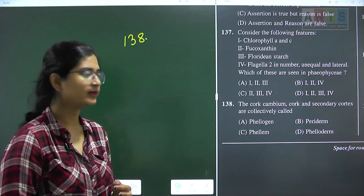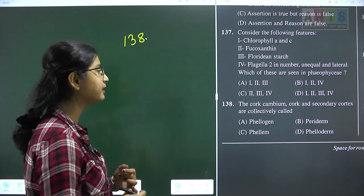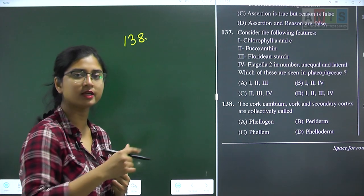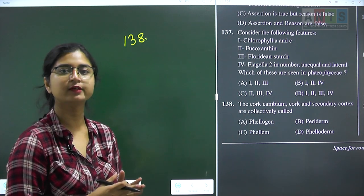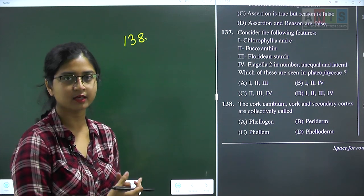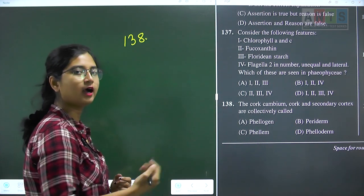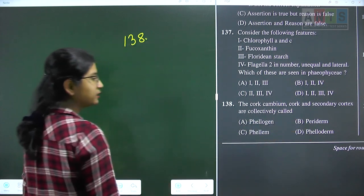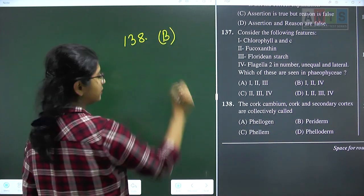Question 138: cork cambium, cork, and secondary cortex are collectively called? These three together form the new outer protective layer of a plant that has undergone secondary growth — they collectively form the periderm. Question 138 answer is option B.